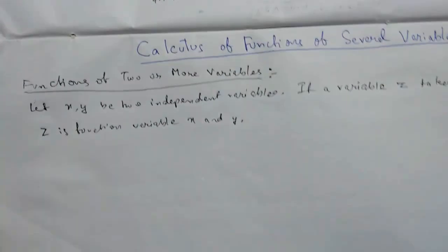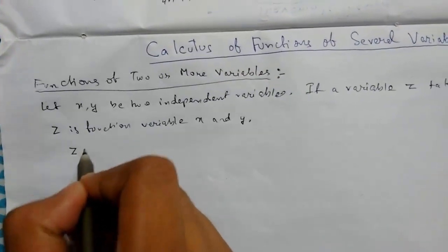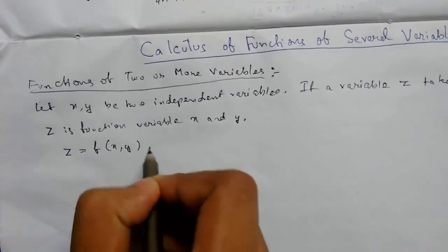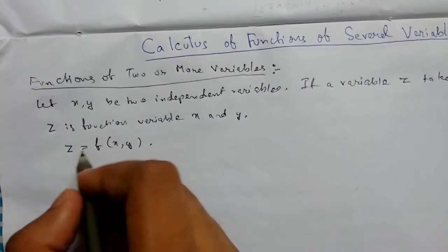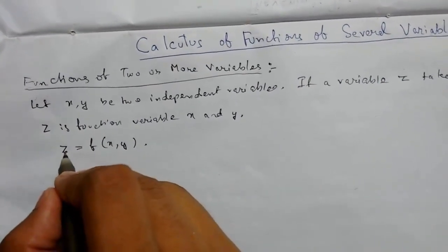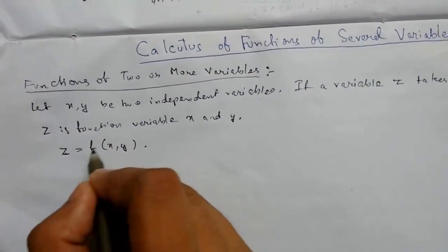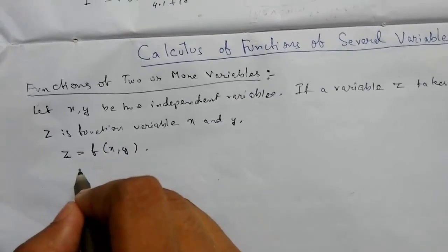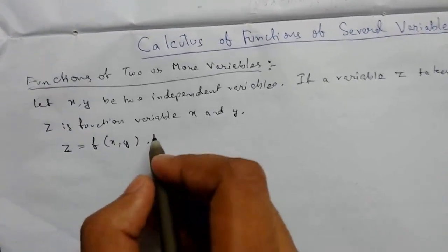So we write it as z equals f of x comma y. For this function, z is a dependent term and x and y are the independent variables.